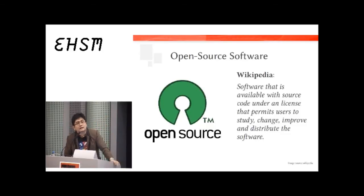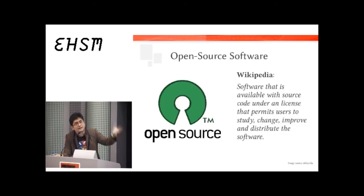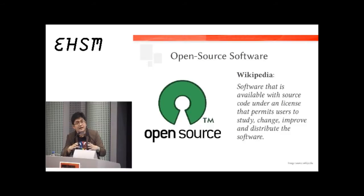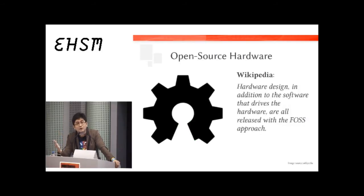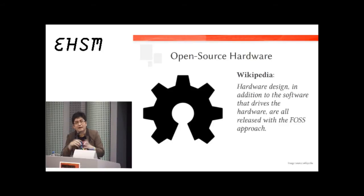Open source software has been around for quite a while. In recent years there's been an open source hardware movement, bringing the concepts of open source software into the realm of hardware. Instead of just making source code available, we also make the designs for hardware available. One of the most popular examples in recent years is the Arduino platform — you can download the schematics, make your own copy, add to it, take stuff away, modify it.